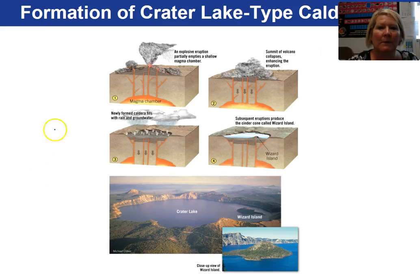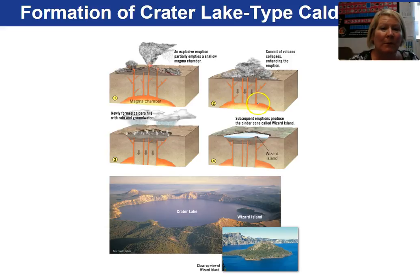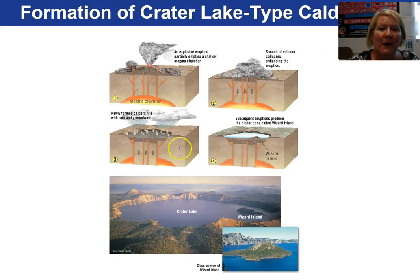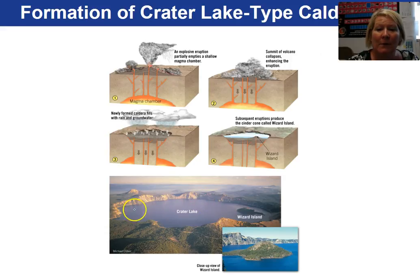Here's how a caldera forms. In picture one we have a magma chamber and these volcanoes are actively erupting. What happens is that eruption empties part of the chamber. The magma has been erupted and the overburden of the existing rock pushes down to the point where it collapses. Upon collapse you have a depressed area that generally will fill in with water. An example of a collapsed crater called a caldera is Crater Lake in Oregon.